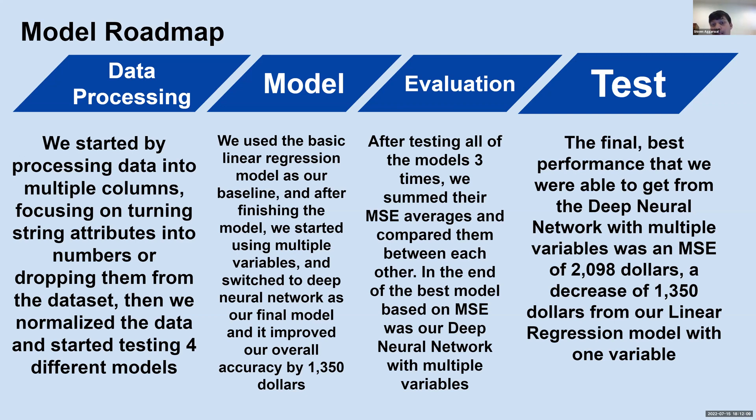The third part of this roadmap is the evaluation. After testing these models three different times, we summed the MSE averages and compared them between each other. The best model based on the mean squared error was the deep neural network with multiple variables. Finally, the test part of the roadmap - the final best performance is the DNN network with multiple variables. The actual summed MSE that we got from the test was $2,098, a decrease of $1,350 from our linear regression model with one variable.